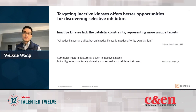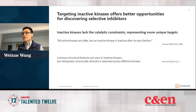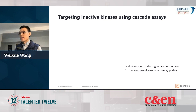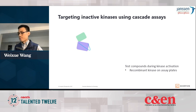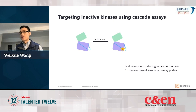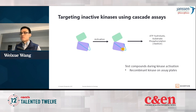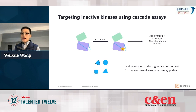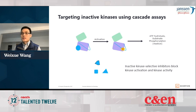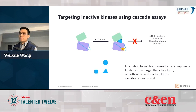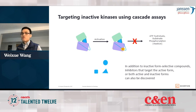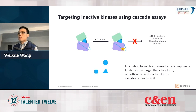So how do we find inhibitors targeting the inactive form of kinases? We try to address this challenge by developing a type of assay called cascade assay. Basically we test compounds during kinase activation using recombinant kinases on assay plates. We start the assay with kinase in the inactive form and activate the kinase during the assay. Once activated, the kinase can catalyze substrate phosphorylation, which is the assay readout. To test small molecule compounds, we add them during the kinase activation reaction. If a compound preferentially binds to the inactive form, it will stabilize the inactive kinase and block activation, and therefore the compound shows up as an inhibitor in the assay. You could also find compounds that preferentially inhibit the active form, or compounds that bind to both active and inactive forms.